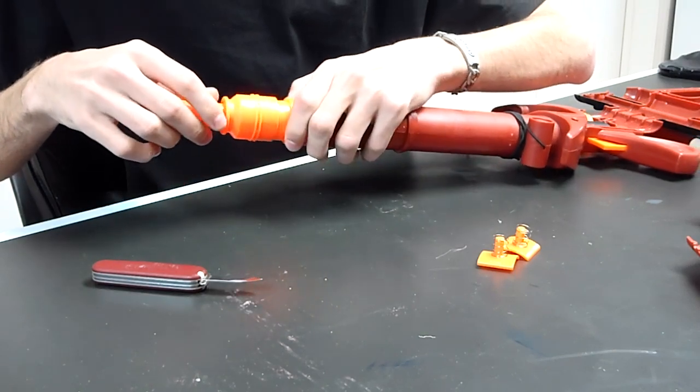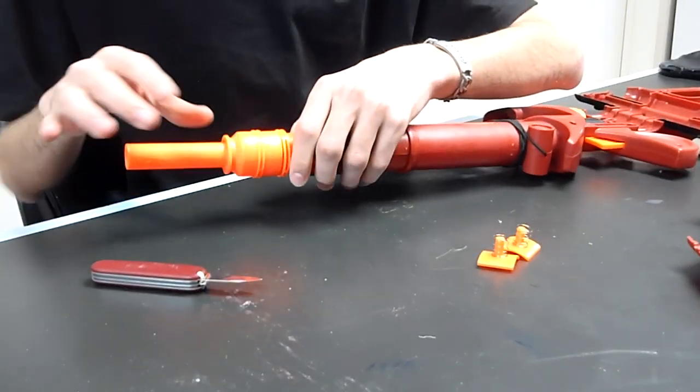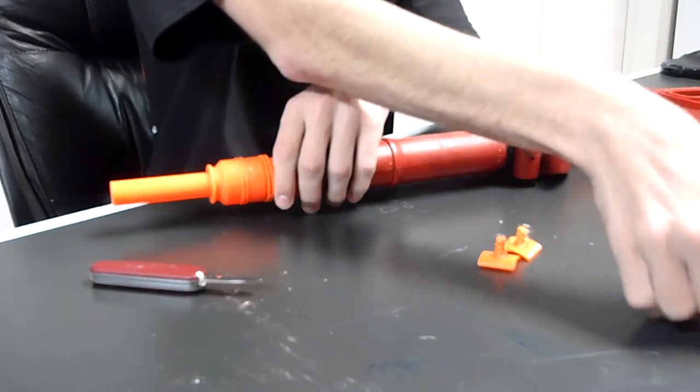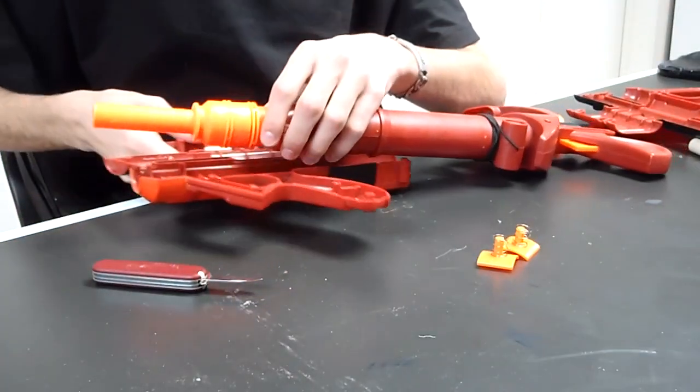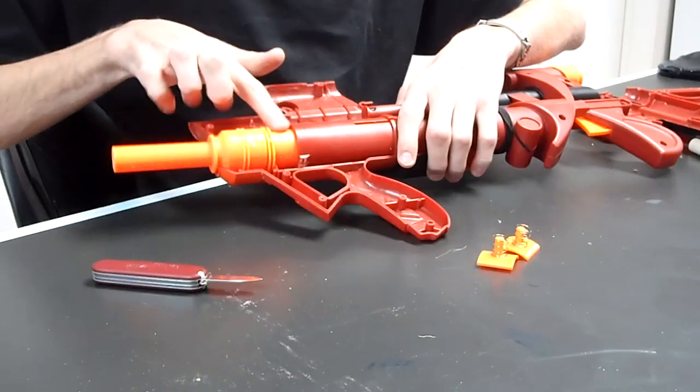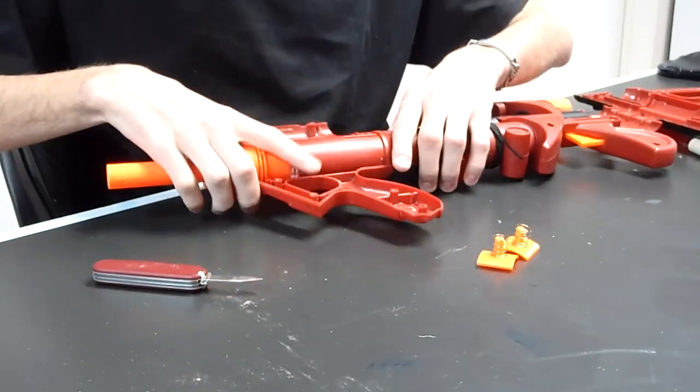So put that there. Lock those pieces back together. Take your back half and line it up so that this is flush with that and that is there.